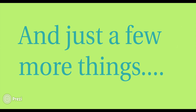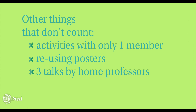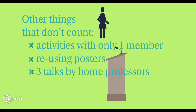There are a few more things you should know before embarking on your path towards being a green chemistry student chapter. General outreach activities don't count towards the green chemistry award either. These are things like making elephant toothpaste and slime with local elementary schoolers or bake sales at a club fair. Each green chemistry activity has to come back to those design principles. Also, activities with only one member involved, reusing posters from previous years, and attending three talks by professors at your home university — none of these count.